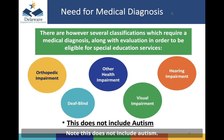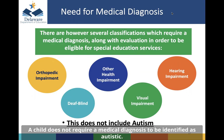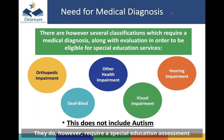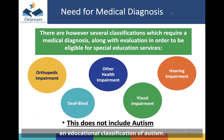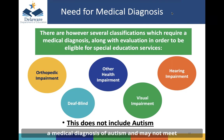Note, this does not include autism. A child does not require a medical diagnosis to be identified as autistic. They do, however, require a special education assessment to determine they meet eligibility requirements of an educational classification of autism. There may be cases where a child receives a medical diagnosis of autism and may not meet the eligibility criteria of an educational autism classification.